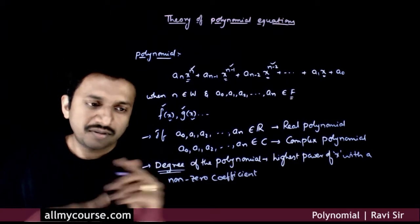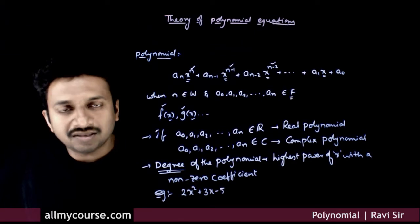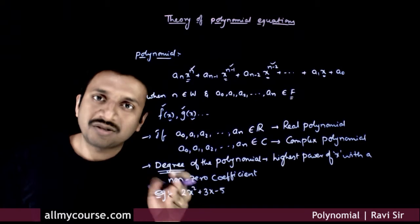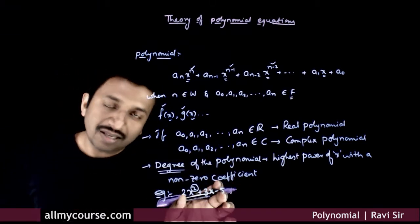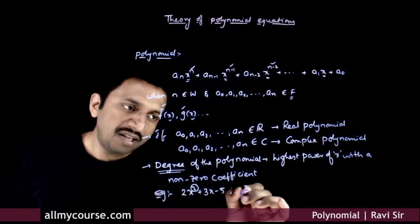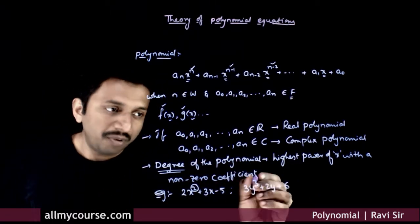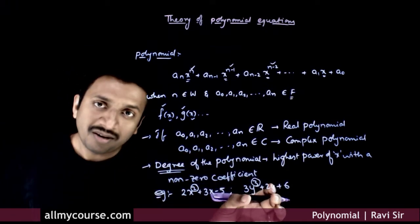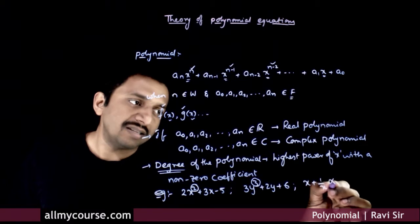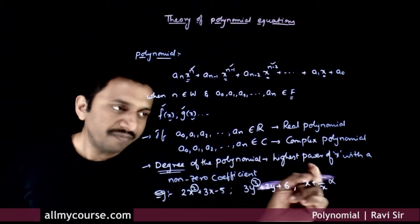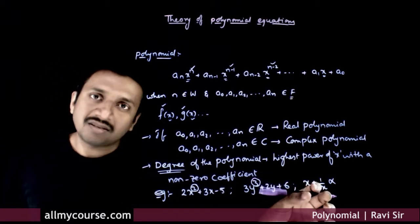Let us take some examples. If you take 2x² + 3x - 5, this is a polynomial in the variable x and the degree of this polynomial is 2, because x² is the highest power of x present in this expression. If you have 3y³ + 2y + 6, this is a polynomial of degree 3 defined in the variable y. If you have x + 1/x, this is not a polynomial because 1/x is x^(-1) — the powers of x are not all whole numbers, hence this is not a polynomial.